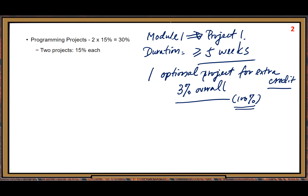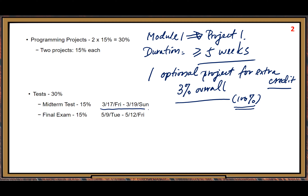Moving to the next item: Tests — 30%. Midterm and final exam. For the midterm, I give you three days: Friday, Saturday, Sunday — working at home. That's plenty of time. The questions are old questions — the questions you practiced before in homework assignments.